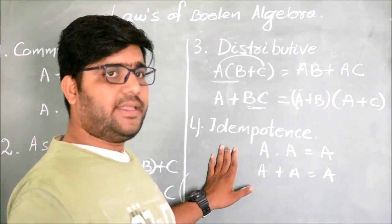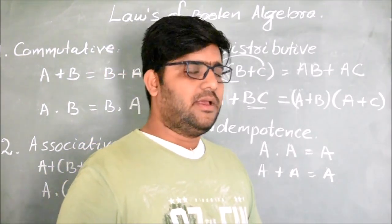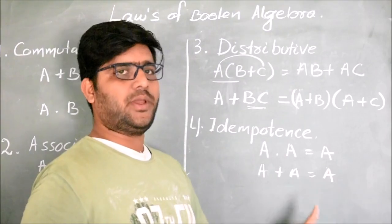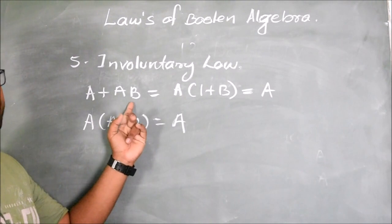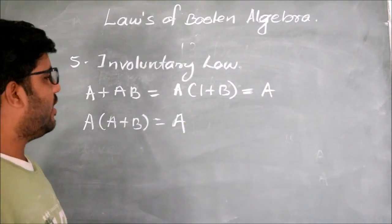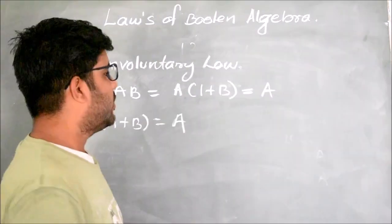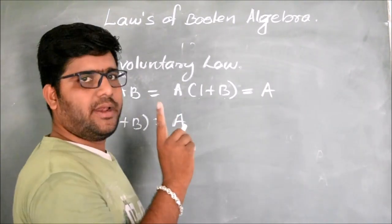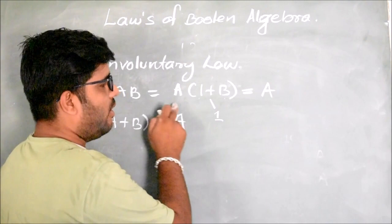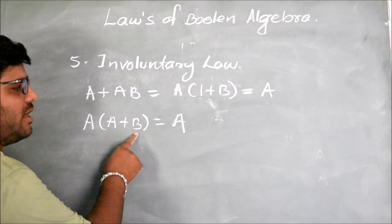The next important law is the Idempotent Law, which says that when there are two equal variables ANDed or ORed with each other, it implies the same variable. The identity property says A AND A equals A, or A OR A equals A. When A OR (A AND B), that implies A, because taking A as common gives A AND (1 OR B), and 1 OR B equals 1. So A AND 1 equals A. Likewise, A AND (A OR B) also gives A.